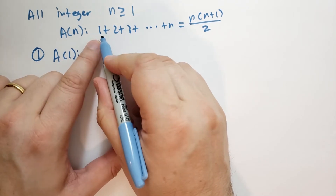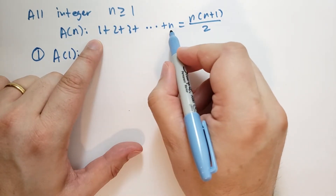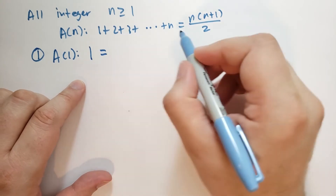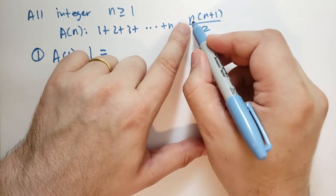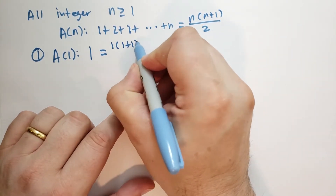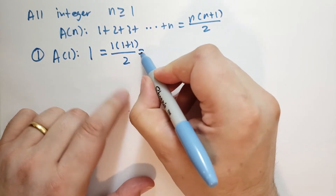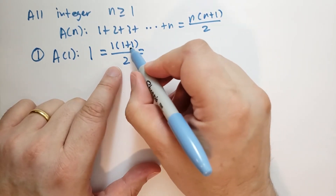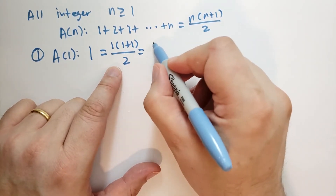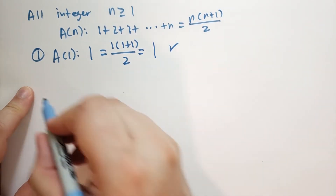What does A(1) say? That's just the number 1, equal to 1 times (1+1) divided by 2. Well, 1+1 is 2, and 2 divided by 2 is 1. So indeed it checks out — it's true for n=1.